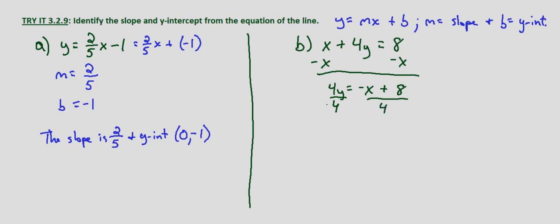That gives us y equals negative 1/4x plus 2. And now it's easier to identify in slope-intercept form. Again y equals mx plus b where m is the slope and b is the y-intercept.